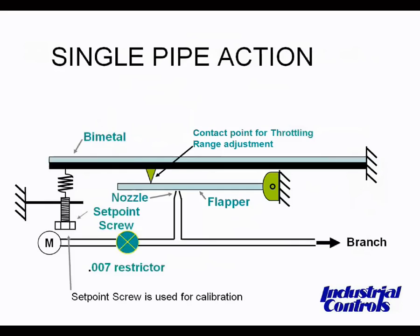We'll talk a little bit more about how a single-pipe thermostat works. This slide shows how a one-pipe thermostat operates. As the bimetal senses a temperature change, it causes the flapper to move, thus increasing or decreasing the nozzle opening. If the nozzle is completely closed, the pressure in the branch line will increase until it is the same as the main pressure. If the nozzle is open far enough, air in excess of the amount coming through the restrictor is bled off, causing the pressure in the branch line to fall to zero. Thus, the thermostat may be thought of as a pressure regulator, varying the pressure in the branch line in direct relationship to the temperature at the bimetal. One-pipe thermostats are very low-volume devices and should only be used with small actuators and valves. The branch line should never be very long — the control device should be no more than 20 to 30 feet from the thermostat. These thermostats have a dial set point and adjustable throttling range.